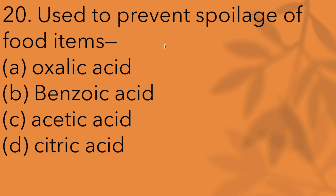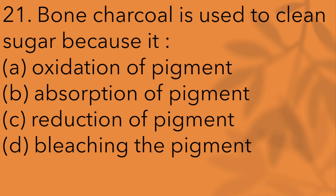Which substance is used to prevent spoilage of food items? Bone charcoal is used to clean sugar because of the adsorption of pigments.